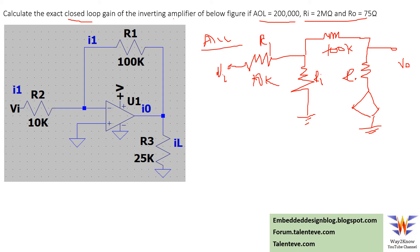If you see, the parameters given are open loop gain, input impedance, and output impedance, which are internal to the op-amp. These two resistors are the external components.